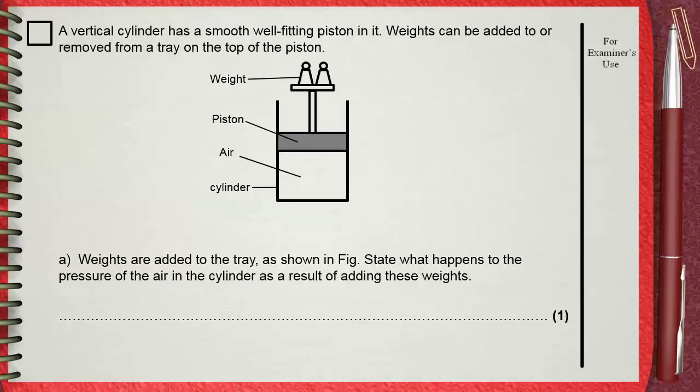This question is about the relationship between pressure, volume, and temperature of an amount of gas. It's important and needs some concentration. A vertical cylinder has a smooth well-fitted piston in it. Weights can be added to or removed from a tray on the top of the piston.